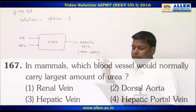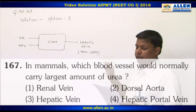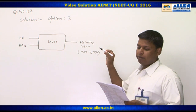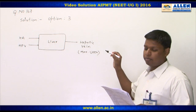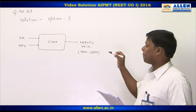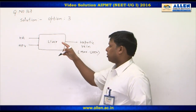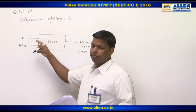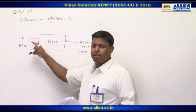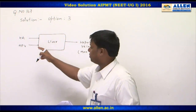In question number 167, the question is: in mammals, which blood vessel would normally carry the largest amount of urea? The liver receives blood from two different blood vessels — one is the hepatic artery and another is the hepatic portal vein.